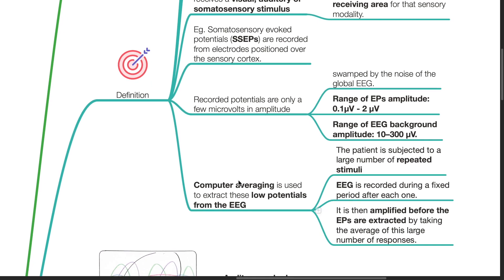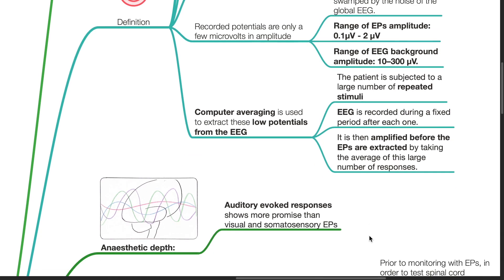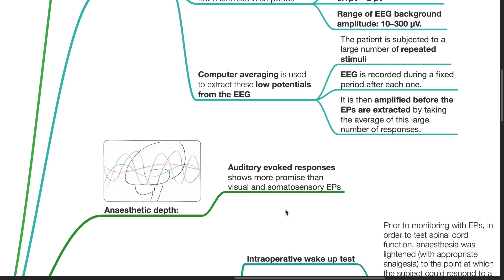Computer averaging is used to extract these low potentials from the EEG. The patient is subjected to a large number of repeated stimuli. The EEG is recorded during a fixed period after each one, then amplified before the EPs are extracted by taking the average of this large number of responses. EPs are used to measure anesthetic depth, and auditory evoked responses show more promise compared to visual and somatosensory EPs in this respect.